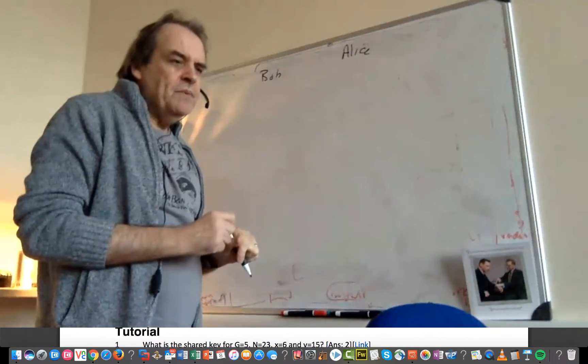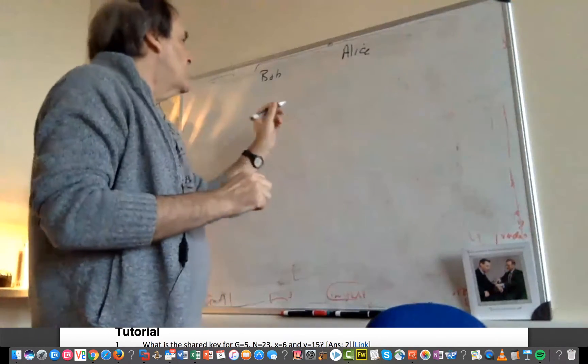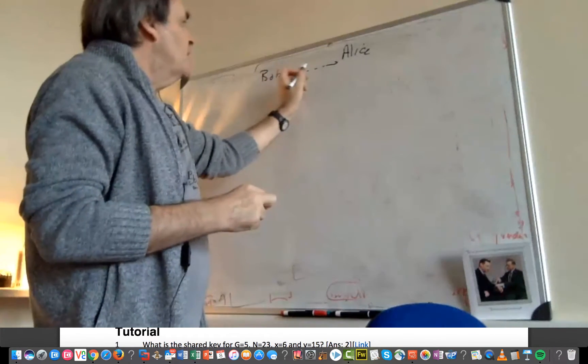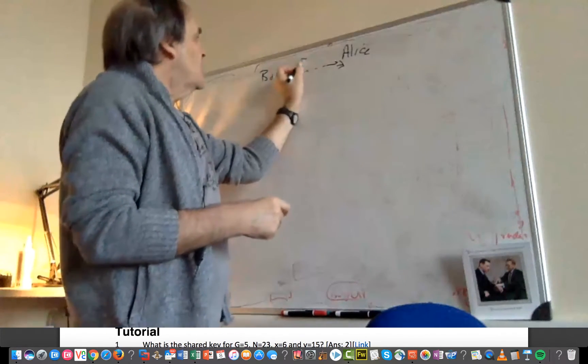So we call this symmetric encryption, where we use the same key to encrypt as we do to decrypt. What we really want at the end of our conversation is for us to end up with the same secret key.